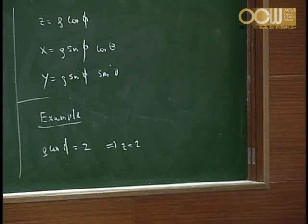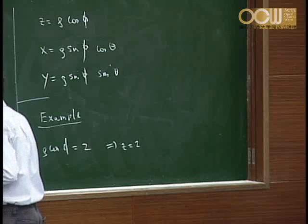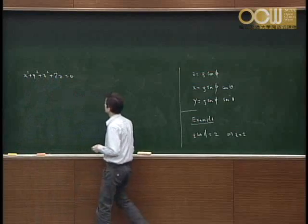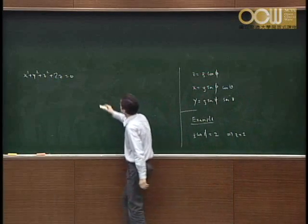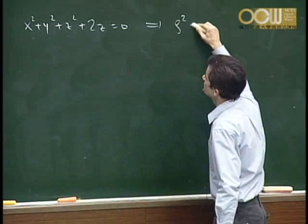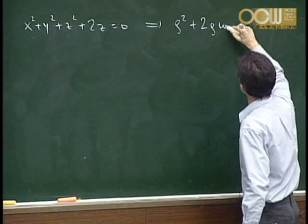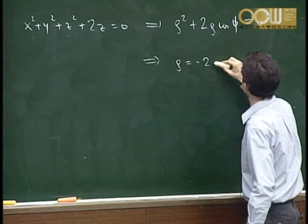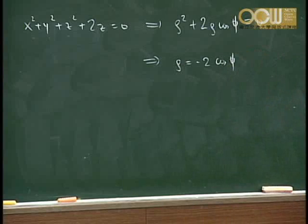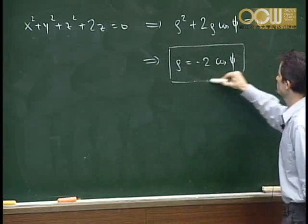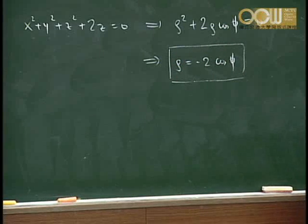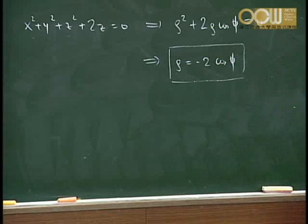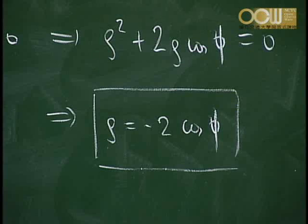The name 'spherical coordinates' comes from the fact that a sphere centered at the origin is described very simply as ρ equals constant. When the center is not at the origin, the equation is more complex — such as ρ equals −2 cos φ — but a sphere centered at the origin just requires ρ to be constant, which gives the name.